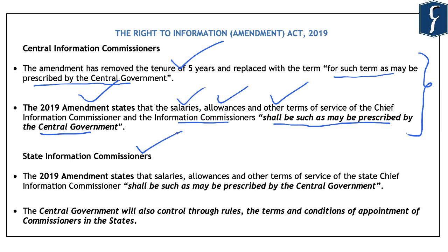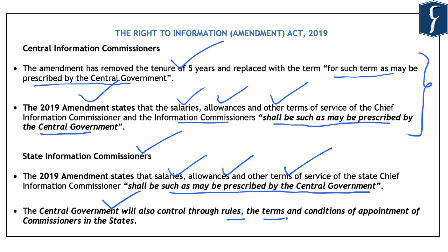Regarding the State Information Commissioners, the original Act provided that the tenure of service will be 5 years or 65 years of age, whichever is earlier, and the Chief Information Commissioner of the state was to be considered similar to an Election Commissioner, while the salaries and other terms of services of State Information Commissioners were to be the same as the Chief Secretary to the State Government. However, the 2019 amendment has changed this so that the salaries, allowances, and other terms of services shall be as prescribed by the Central Government, and the Central Government will control through rules the terms and conditions of appointment of Commissioners in the State Governments.